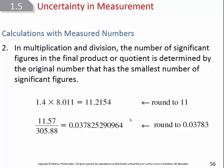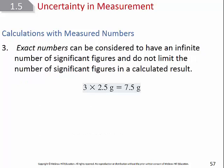What about exact numbers in calculations? Exact numbers have no error and technically have an infinite number of significant figures. So if you have 3 objects each weighing 2.5 grams and want the total mass — 3 × 2.5 — the 3 is an exact number (counted whole objects), so it doesn't limit your sig figs. You round according to the inexact number: 2.5 has 2 significant figures, so the answer 7.5 has 2 significant figures.